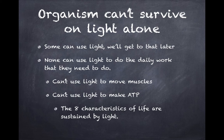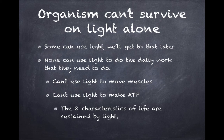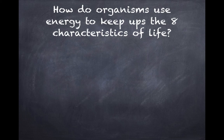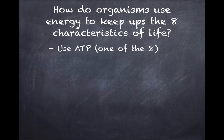Organisms, though, can't survive on light alone. Some organisms can use light — we'll get into that later as part of this chapter, and we already know about photosynthesis. But none of the organisms on the planet can use light to do the daily work they need to do. You can't use light to move your muscles, and no organism uses light to build ATP. So those eight characteristics of life we learned about in the first chapter are not sustained by light directly — but ultimately they are sustained by light, because light can be converted to chemical energy.